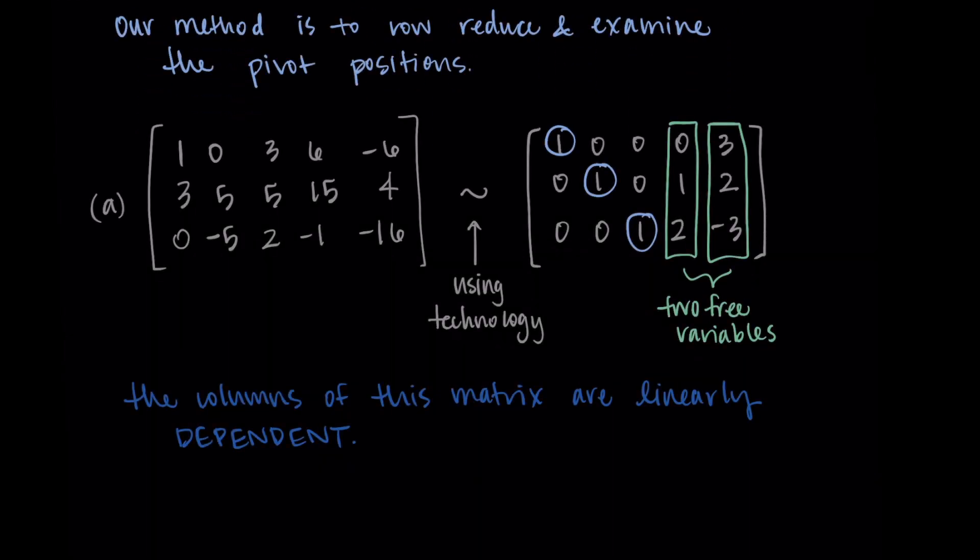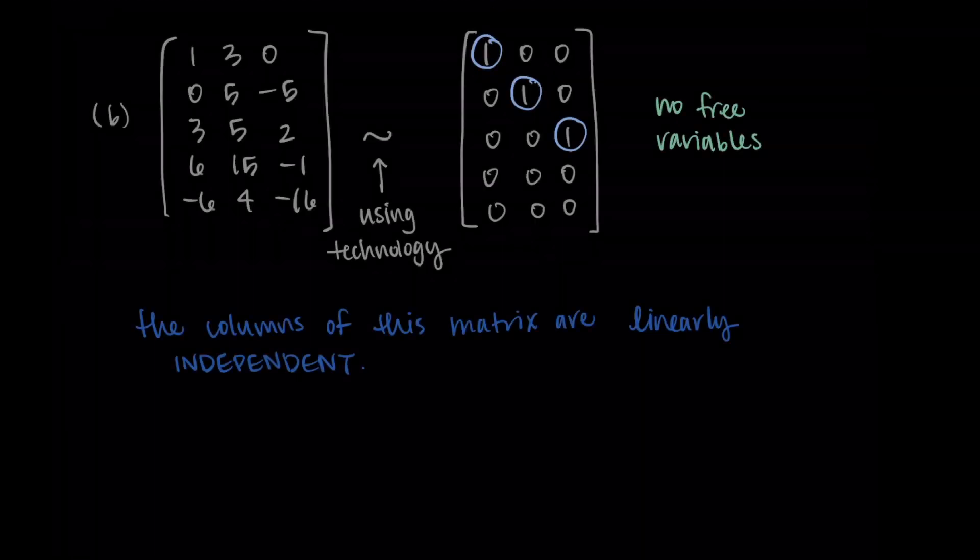I want to make some comments about the number of rows and columns. In our first example, we had three rows and five columns — too many vectors — so the final two were redundant. We could only have three possible pivots since we only had three rows, so it makes sense we ended up with free variables and a linearly dependent set. However, in the second example, we had five rows and only three columns, so we were able to have a pivot position in each column. We can summarize this more generally with some conclusions.